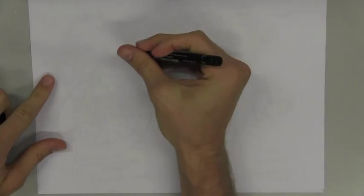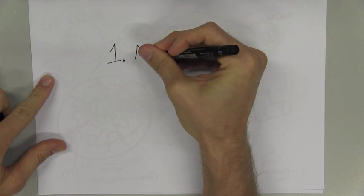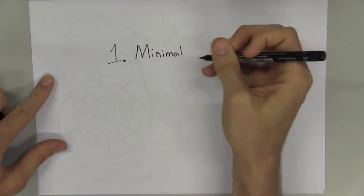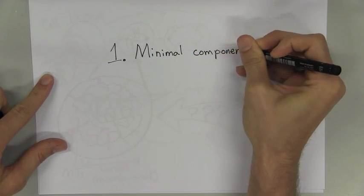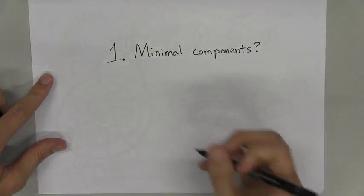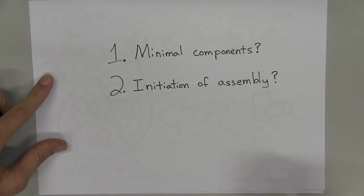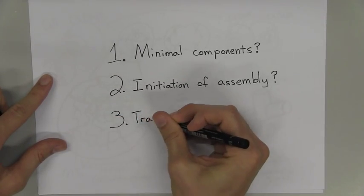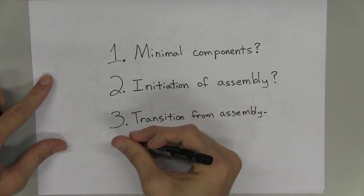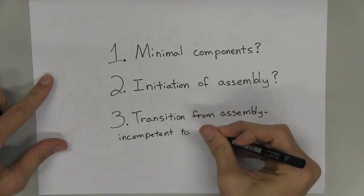With this system, I can hopefully address pressing questions like: What are the minimal components needed to form a micrometer-sized matrix? How is PCM assembly initiated? And how do the starting proteins transition from an assembly-incompetent state to an assembly-competent state?